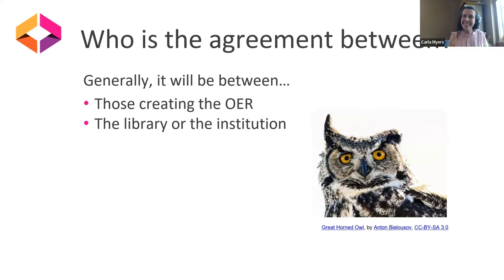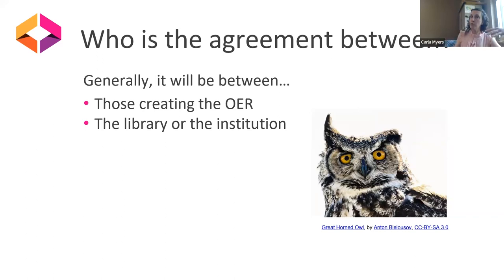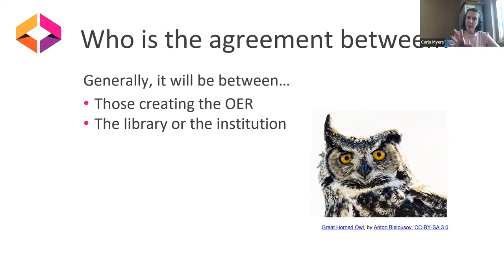So there are a few things you need to consider. First, who is the agreement going to be between? Very obviously, it is going to be between those creating the OER, whether it is one author or multiple authors. One thing when there are multiple authors — sometimes people have what we call a corresponding author. If we have a project with five authors, the corresponding author receives communications, shares them with the other authors, brings back the group decision, and communicates it back to us. There are some pros and cons with this model.